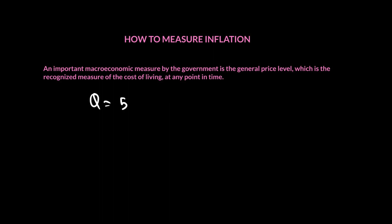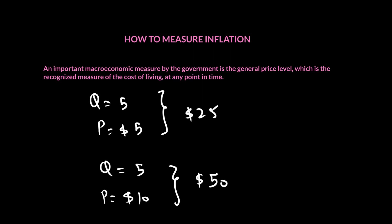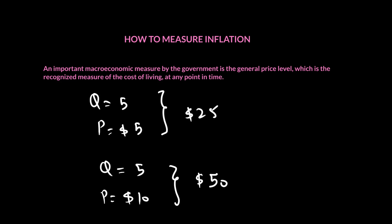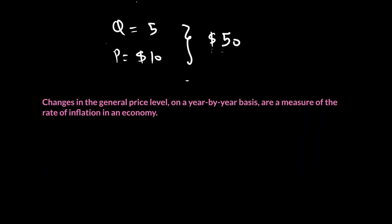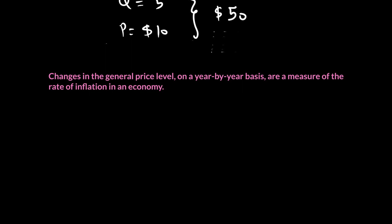So knowing your general price level helps figure out the cost of living. The changes in the general price level on a year-to-year basis is what we call the rate of inflation. To figure out the rate of inflation, we typically create what's called a price index, which is a cumulative way of looking at prices.